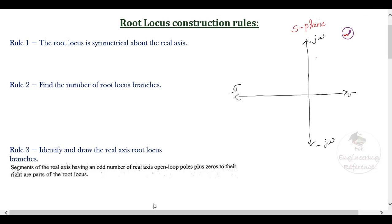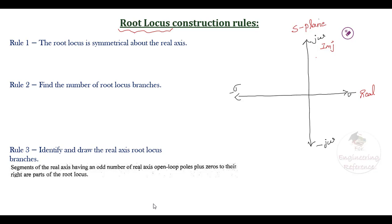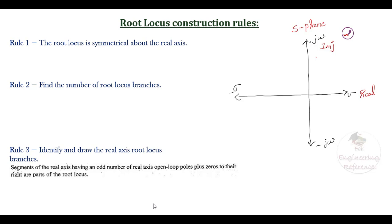The s-plane has a real axis and imaginary axis. Root locus is the location of roots — from the transfer function given, we find the number of roots and all roots are located on the s-plane. The location of roots will change for variation in system parameters, for example when the open loop gain k is varied from 0 to infinity, the roots are going to change.